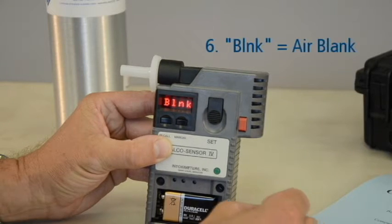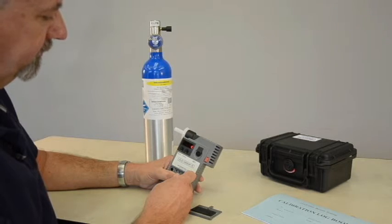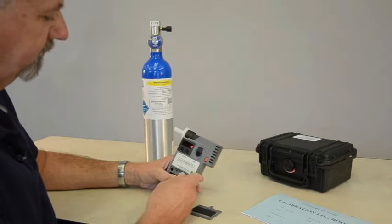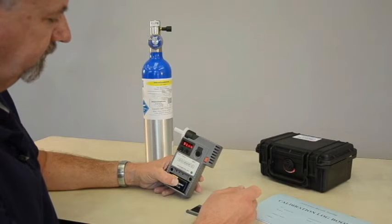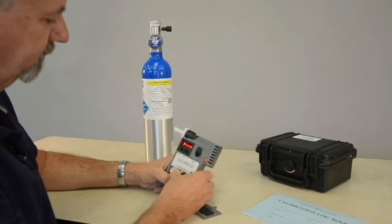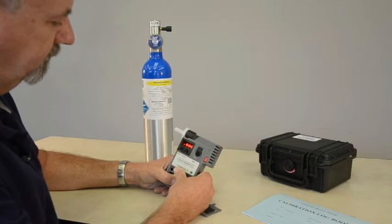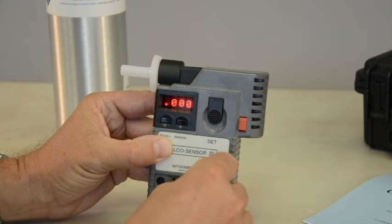the device will display BLNK. This means the instrument is performing an air blank on the device. An air blank is a procedure that checks the device for any residual alcohol that may remain from a previous test. If the instrument is free of alcohol, it will read 0.000 for a few seconds.